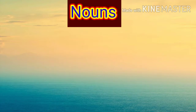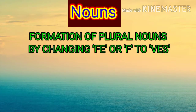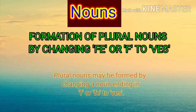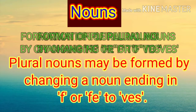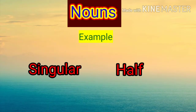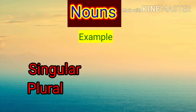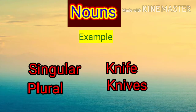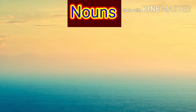Formation of plural nouns by changing -fe or -f to -ves. Plural nouns may be formed by changing a noun ending in -f or -fe to -ves. For example: half (H-A-L-F) — plural form will be halves (H-A-L-V-E-S); knife — knives; leaf — leaves. We are adding -ves at the end.